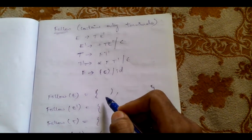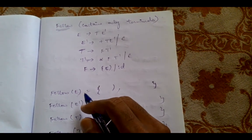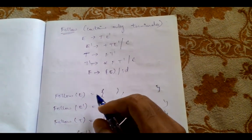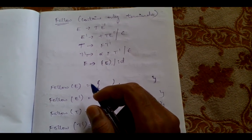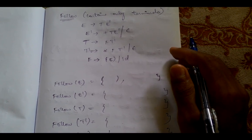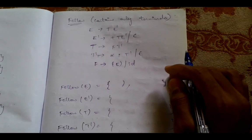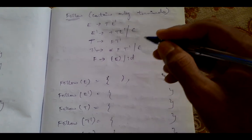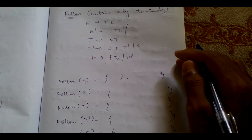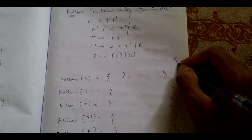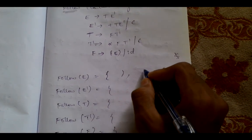One more important rule to remember is that the follow of the start symbol of a grammar will always contain a dollar. This is because parsing begins when we encounter the start symbol, and once the input is completed — meaning the start symbol has been parsed completely — we reach the end of the input, which is indicated by a dollar symbol. Here E is the start symbol of the grammar, so dollar will always be in the follow of E.